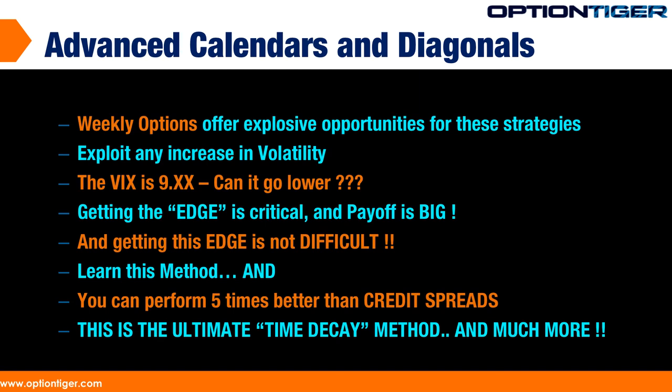If you get an edge into these trades, you're pushing your reward to risk to maybe three to one or four to one. These edges won't come on every trade, but you get it on one trade and that's enough to finance three or four other trades. Getting this edge is not difficult — you just have to learn the method and follow it in a systematic manner. One good edge trade can perform five times better than a credit spread.